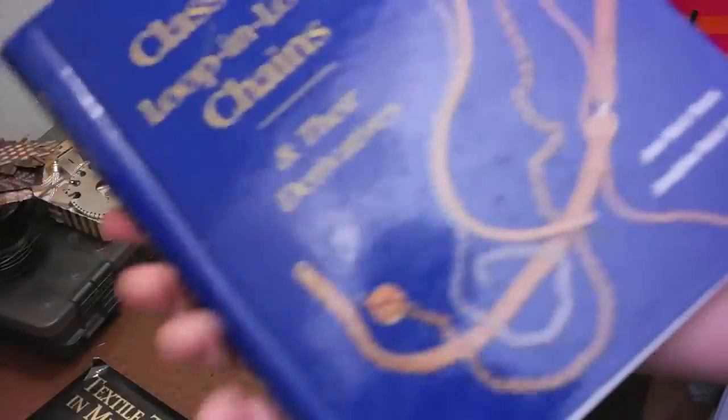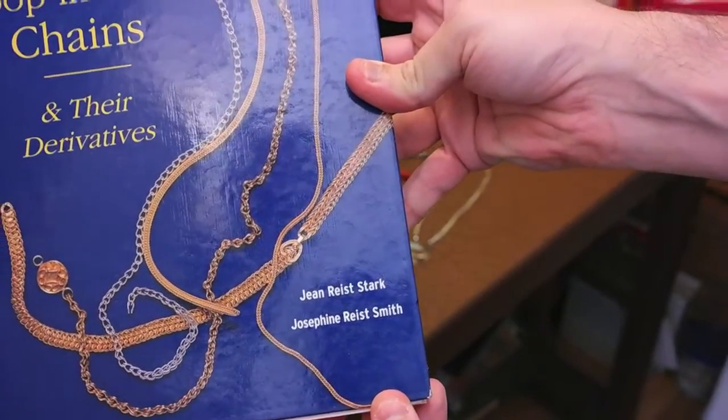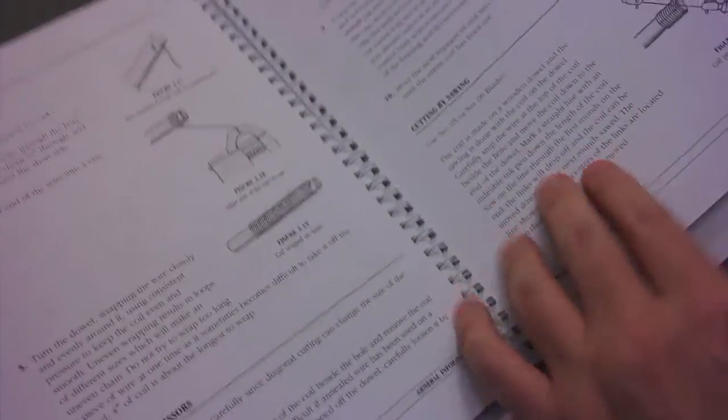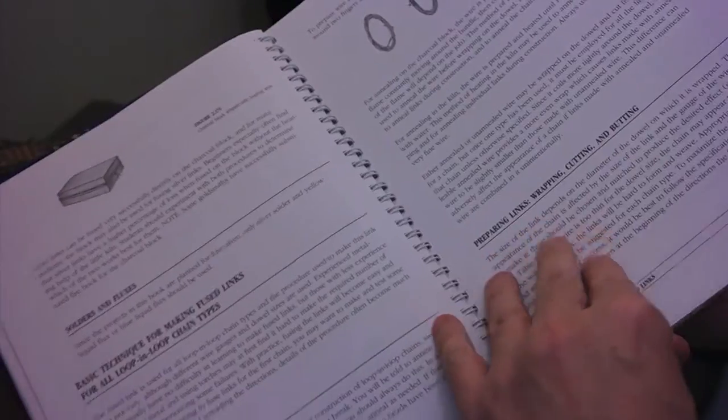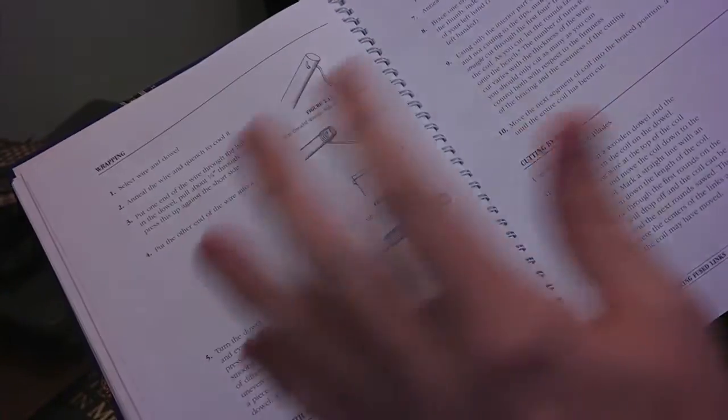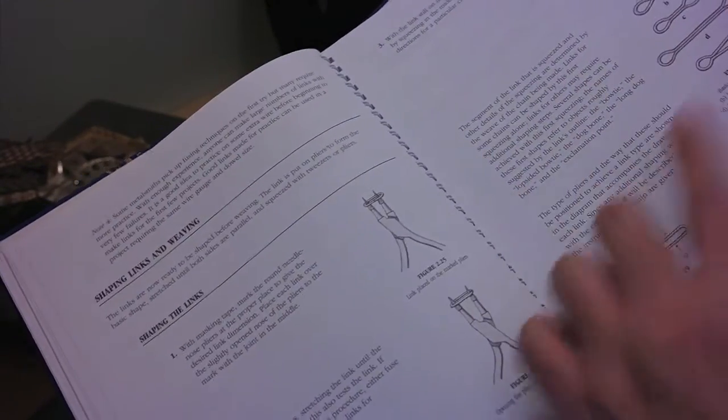Anyway, this book, Classical Loop in Loop Chains and Their Derivatives by Gene Stark and Josephine Smith. This is a good book to get you started. It kind of talks about different kinds of Byzantine chains, any kind of chains that would require jump rings. It kind of runs you through how much metal you're going to need for each type of chain. And they did a really good job of talking about how to anneal the wire and all that kind of stuff that you'd need to know before you were getting ready to make your own loops and that kind of thing.